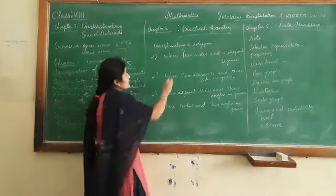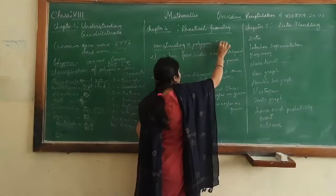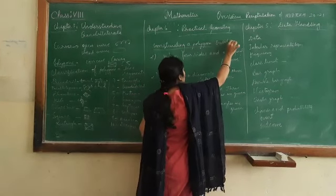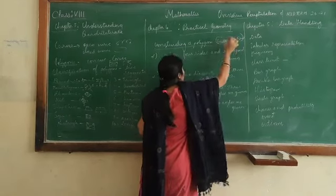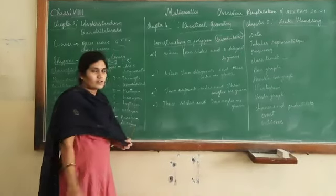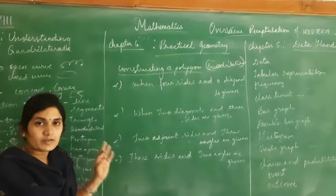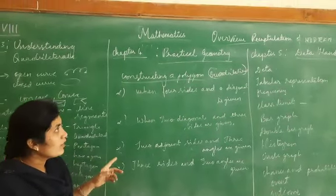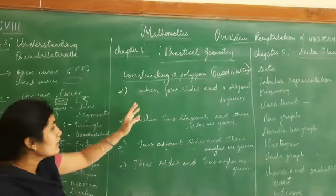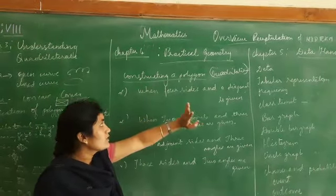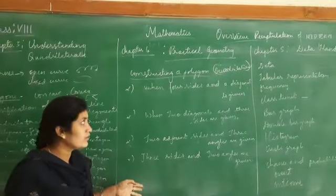Here you have construction of polygons - that is nothing but construction of a quadrilateral. In your syllabus, quadrilateral construction is given. It may be a parallelogram, a square, a rhombus, or a rectangle. Construction of quadrilaterals is done under some given conditions.